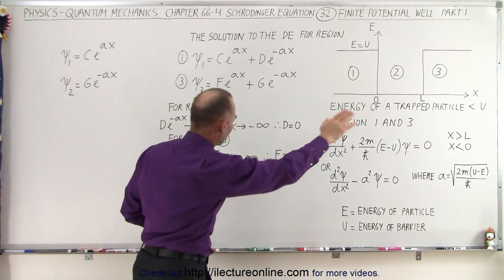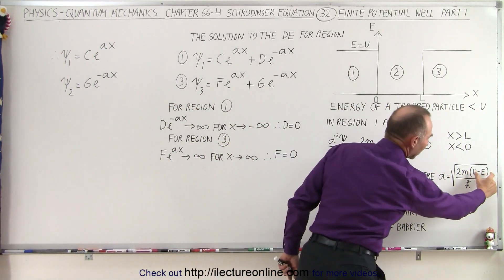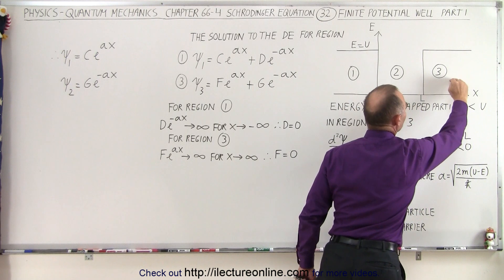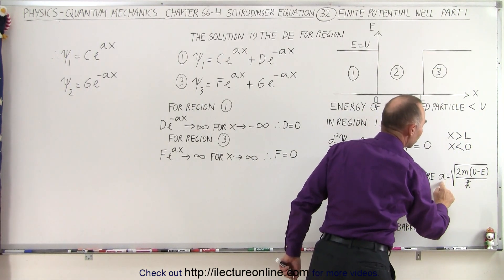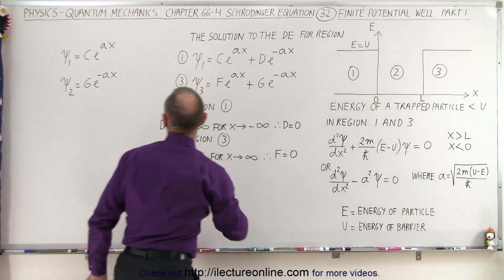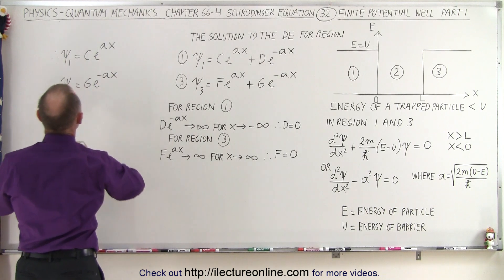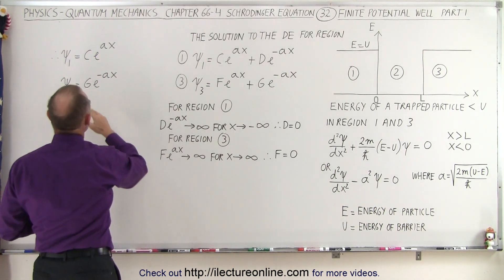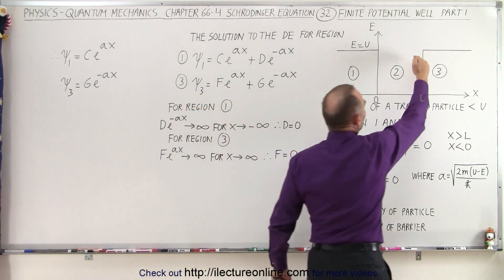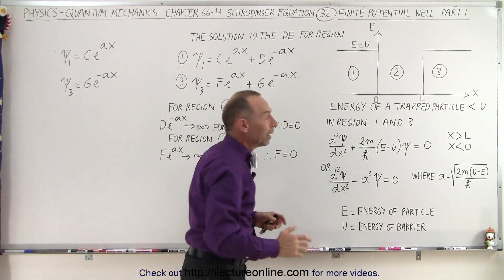If we then look at region 3, same kind of thing. So if u minus e becomes a very small number, if the energy of the particle gets close to the energy required to get over the barrier, then a will become a small number, and if a is a small number in region 3, then we can see that we can expect a slow decaying function in region 3 from this general solution right there.